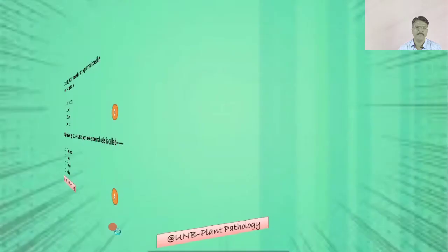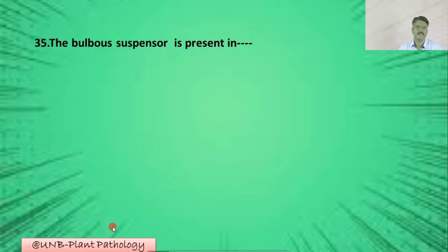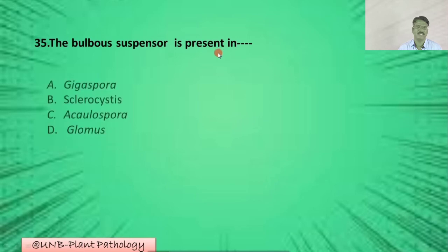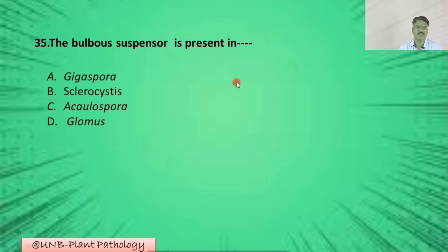Question number thirty-five: The bulbous suspensor is present in which species of mycorrhizal fungi? A: Gigaspora; B: Sclerocystis; C: Acaulospora; D: Glomus. The correct answer is A: Gigaspora.